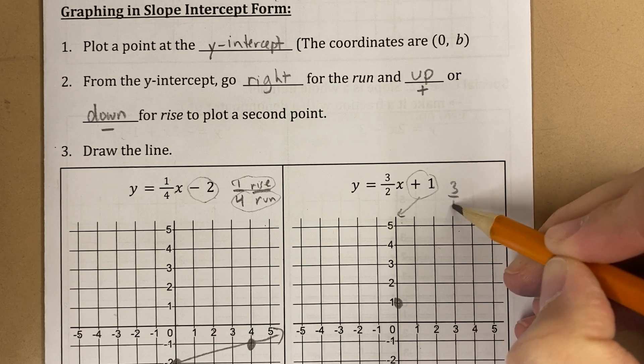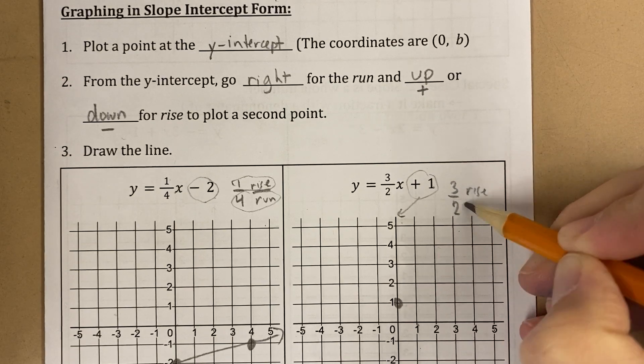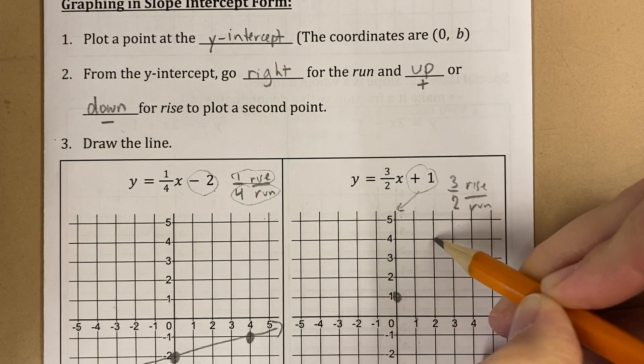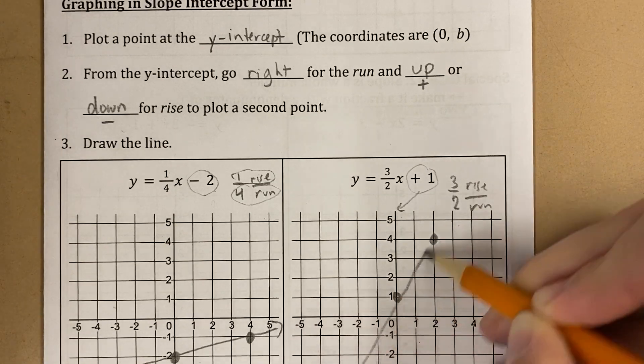And then my rise over run is 3 over 2. So I'm going to rise. 1, 2, 3. Run 2. 1, 2. And here's my line.